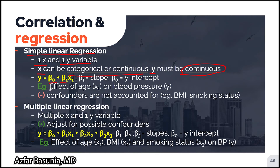As an example, if we're studying the effect of age on blood pressure, age is the independent variable and blood pressure is the dependent variable — and we know from practical experience that blood pressure increases with age. The biggest disadvantage of simple linear regression is that confounders are often not accounted for; for example, BMI and smoking status can confound the results of that regression.